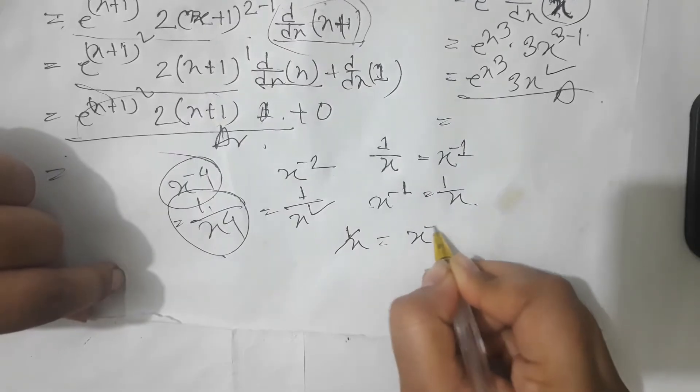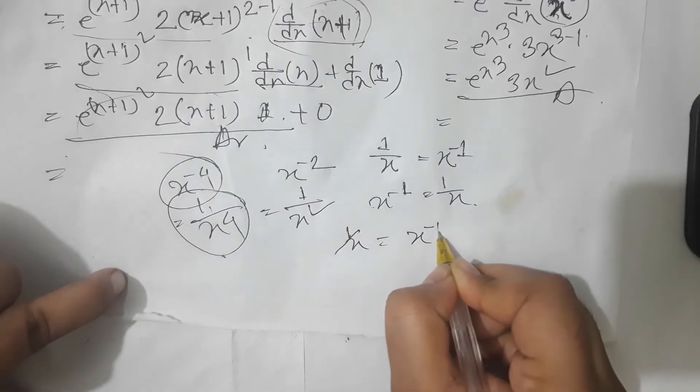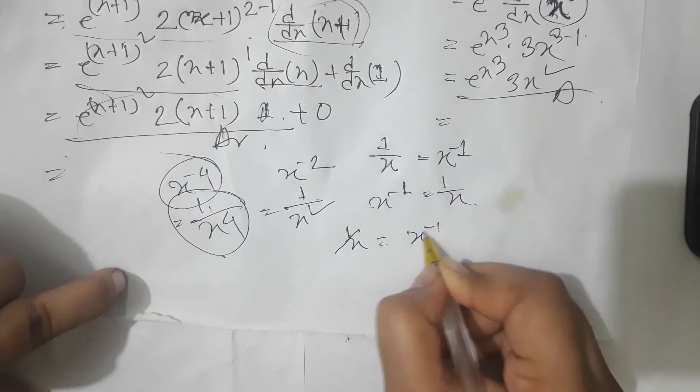We can do x minus 1. So x minus 1 is 0. Then we can do x minus 1.